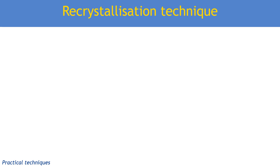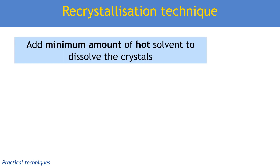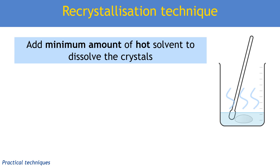So how do we remove both types of impurities and get the highest yield of solid? The most important thing we do with our solid — already filtered out of our reaction mixture — is we add the minimum amount of hot solvent to dissolve the crystals. The solvent should be as hot as we can get it without it boiling away. This is to get the most saturated solution possible, ensuring maximum crystals back out. If we add too much solvent or it's not hot enough, when we cool it down we won't get as many crystals back.